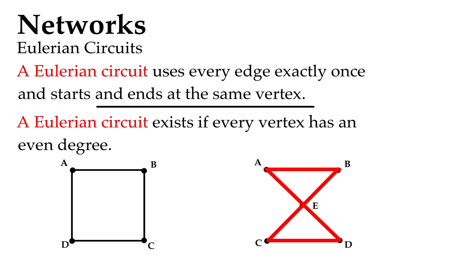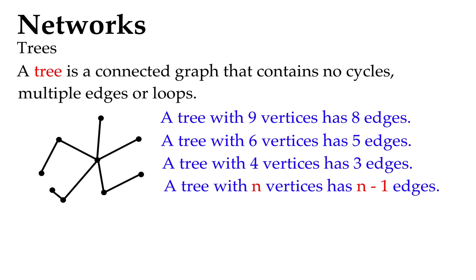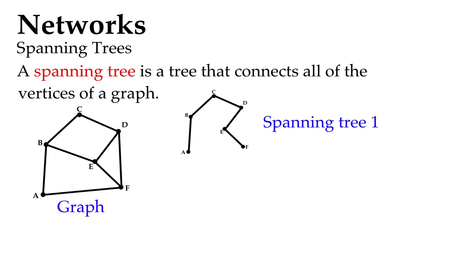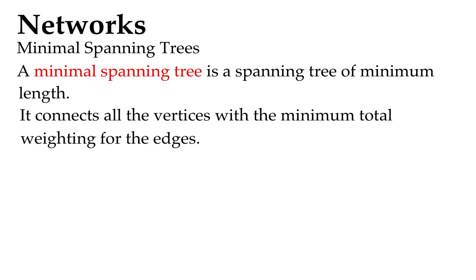Trees and spanning trees: a tree just connects, it's a graph connecting vertices with no fancy things, no extra edges that aren't necessary. You'll tend to find, matter of fact always, a tree if it's got a certain number of vertices has one less edge. There's a bit of a pattern there because we don't really need to draw the last edge in on a tree. A spanning tree is pretty fancy: it's a little diagram or a part of the full graph of the original graph that connects all the different vertices, and you can do that in different ways, some minimal, some maximal. Minimal spanning trees is a spanning tree of minimum length. It connects all the vertices with the minimum total weighting for the edges.